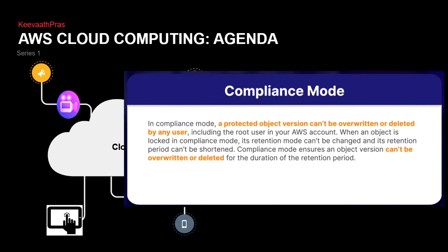Compliance means a protected object version cannot be overwritten or deleted — and this is where it gets interesting — including the root user in your AWS account. The root user is the main person; we started AWS using a root email ID which is the main email ID. When an object is locked in compliance mode, its retention mode can't be changed and its retention period can't be shortened. The compliance mode ensures the object cannot be overwritten or deleted for the duration of the retention period, making sure no one accidentally tampers that object.